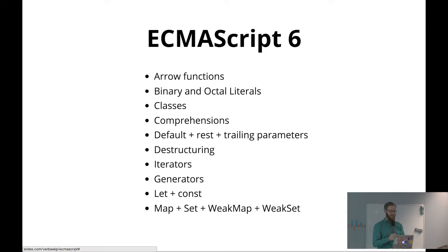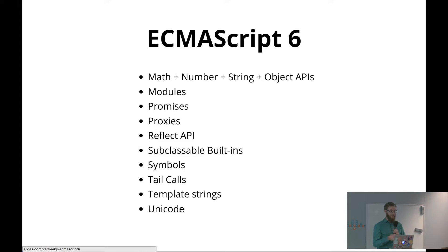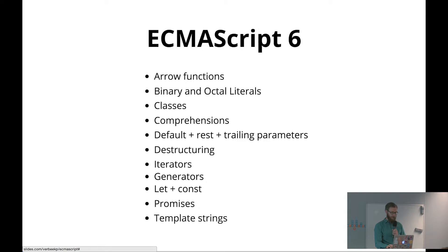So what did ECMAScript 6 bring? That's a lot. I'm going to talk about some of it, not everything. ECMAScript 6 brought arrow functions, which I'll explain later. It brought classes, different kinds of maps, new math objects, promises, new Unicode support. I'm going to be talking through this list and if you have any questions, please just raise your hand or speak up. First, I'm going to say a little bit about template strings.